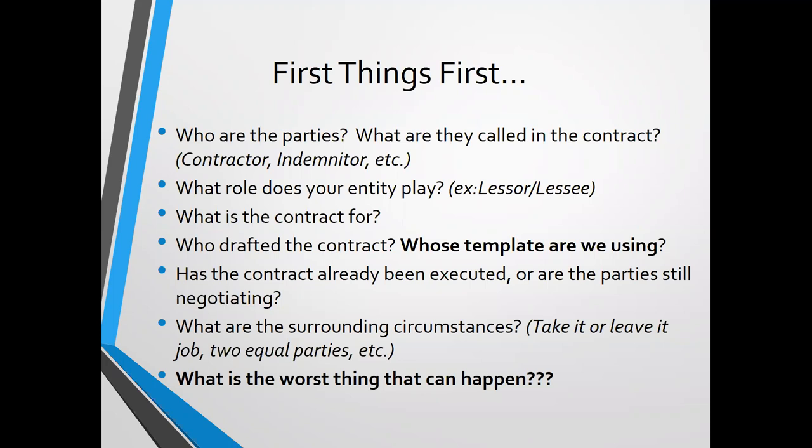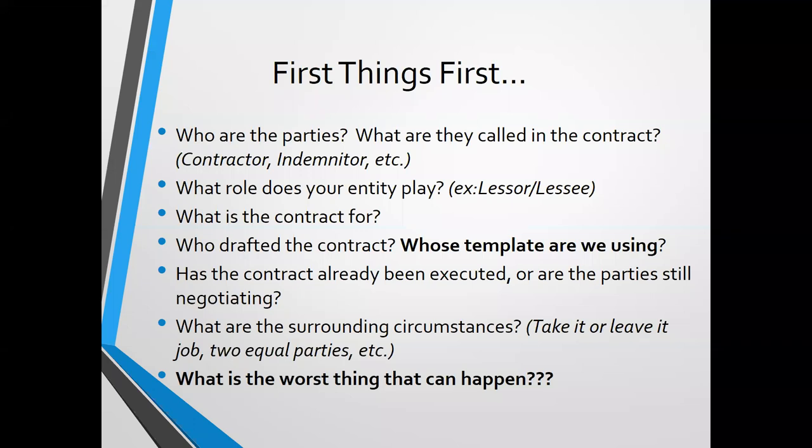One of the biggest considerations from a negotiation standpoint is whether a contract has already been executed. If it has and we find exceptions that the state can't agree to from an insurance standpoint, that can be much more difficult to navigate. Are there special circumstances — emergency procurement protocols, a cooperative endeavor agreement with a local governmental entity, or leasing temporary space due to a natural disaster? And always, as a risk management professional, the key question is: what's the worst thing that can happen?